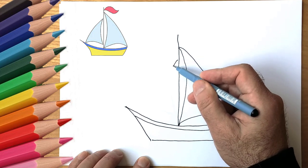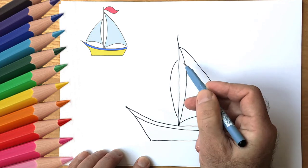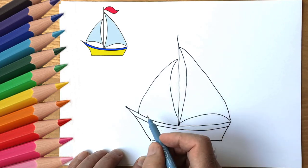Two sails are attached to the mast. We draw the first sail. Now draw the second sail. It is smaller.